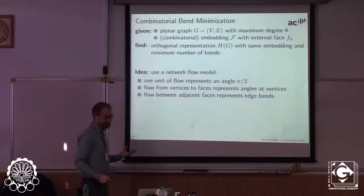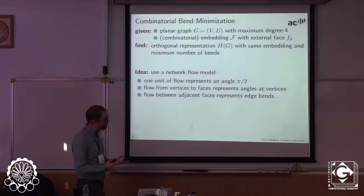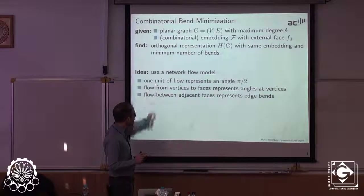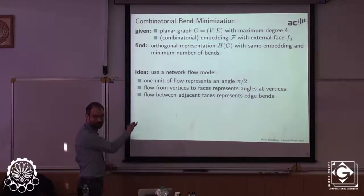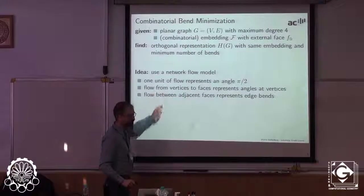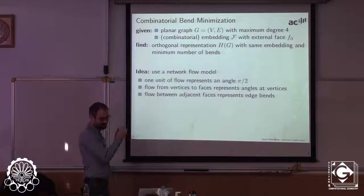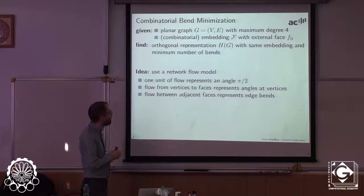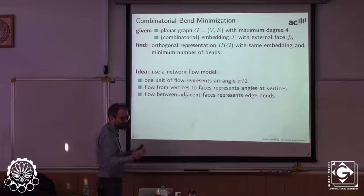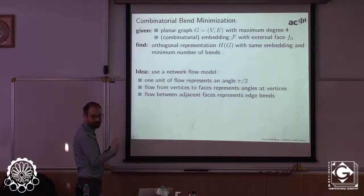The idea for computing an orthogonal representation is to use a network flow model. One unit of flow means a 90-degree angle. We want flow from vertices to faces — every vertex produces four units of flow distributed to adjacent faces — and flow between different faces, representing exchange of bends, ensuring the total bends match the required sum of four per face.